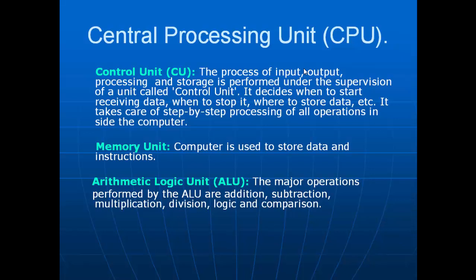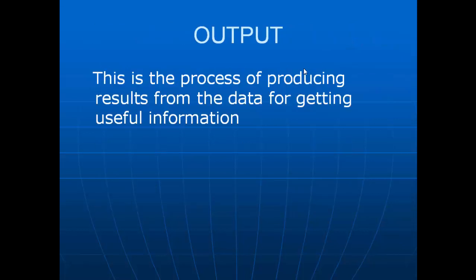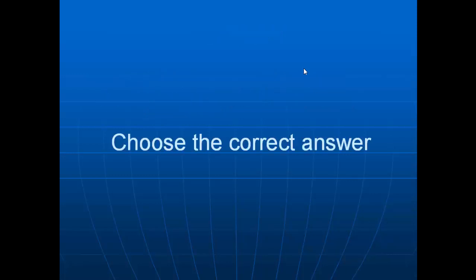Output — this is the process of producing results from the data for getting useful information. The user gives input to the PC, the processor performs some processing, and finally produces results. That result is shown via output devices. The processed data becomes information, which is displayed on the output device.